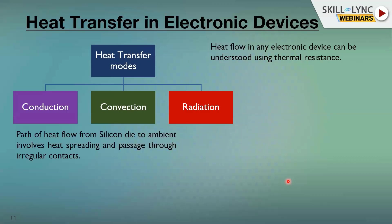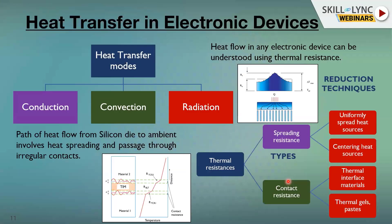In system thermal design, you have to throw the heat away from the silicon die to ambient. That path of heat flow involves heat spreading and passing through irregular contacts, all of which give rise to different resistances. These are characterized by two types: spreading resistance and contact resistance.